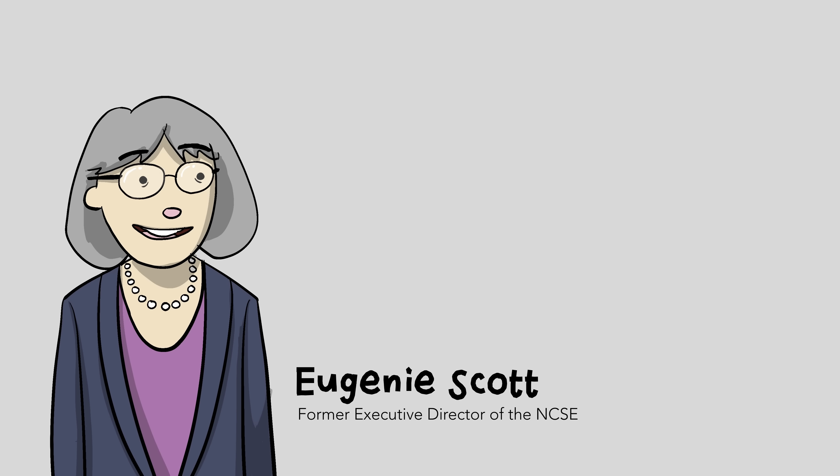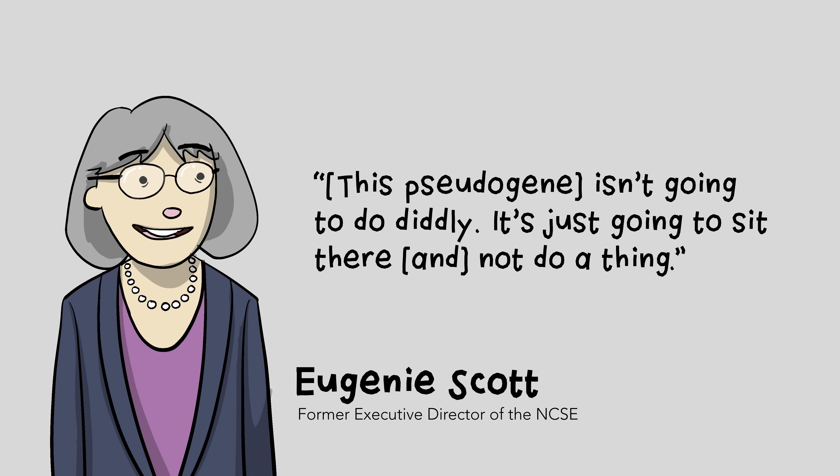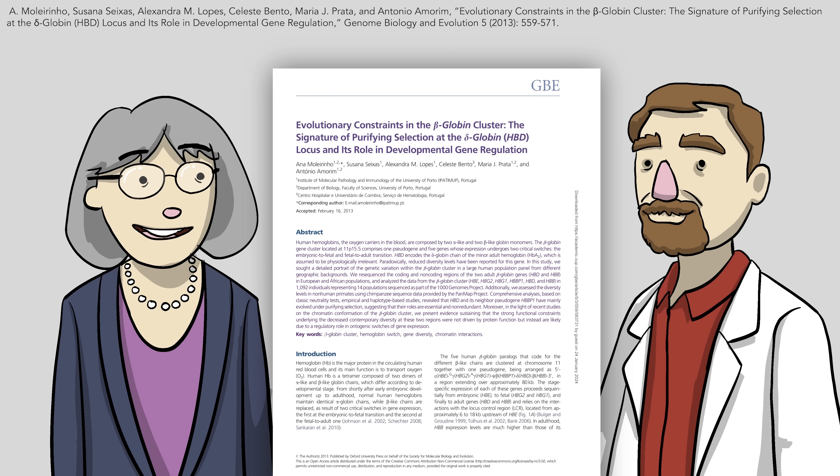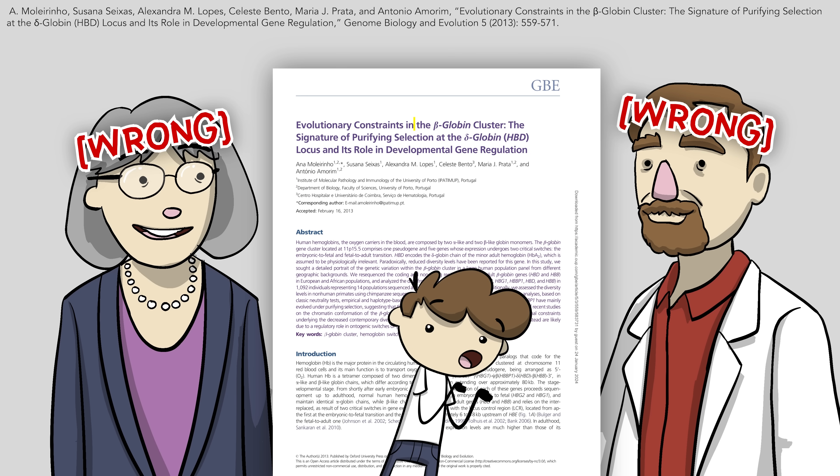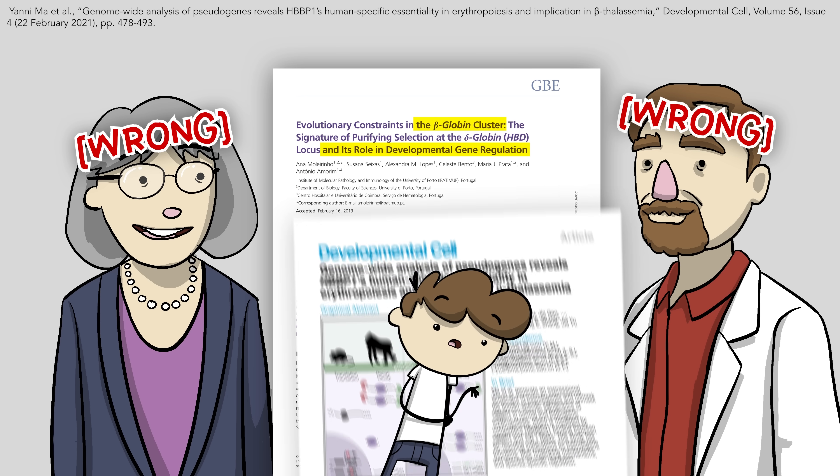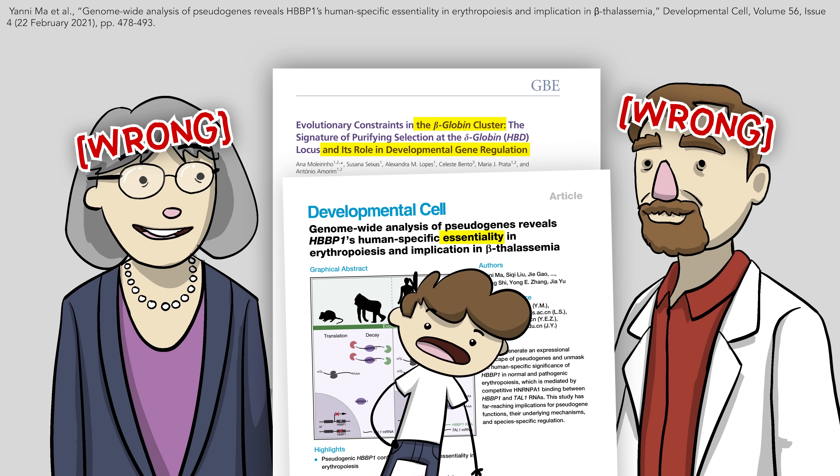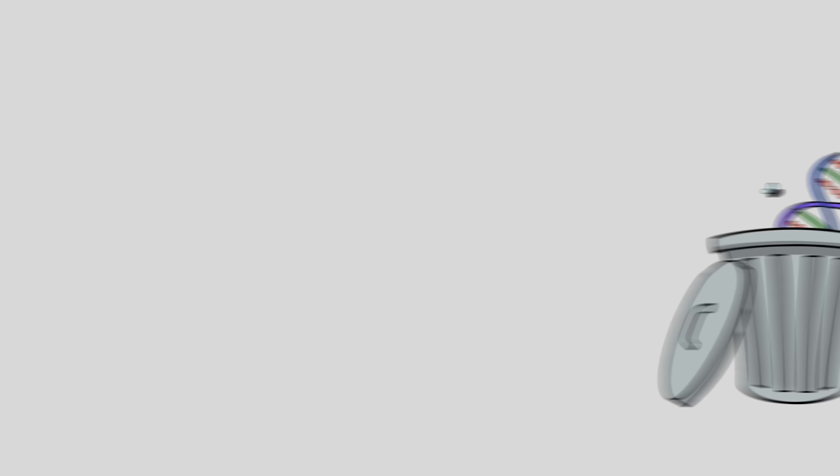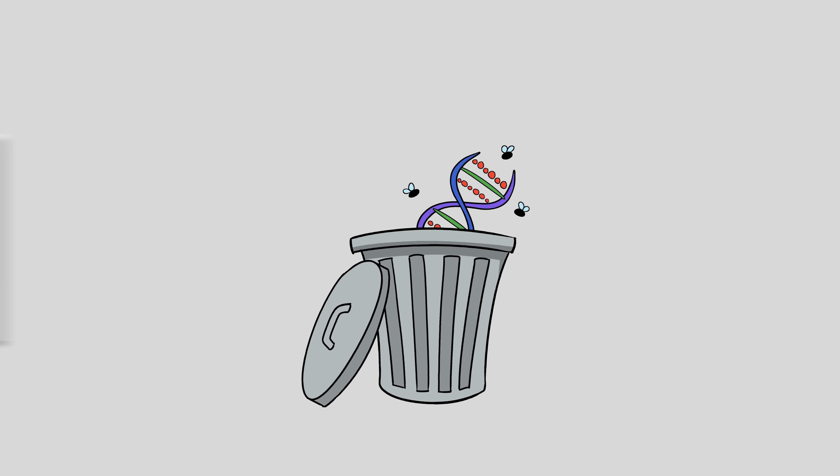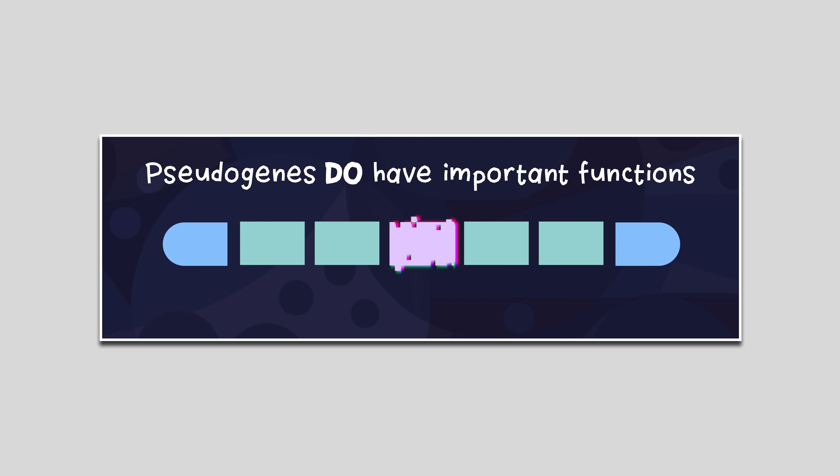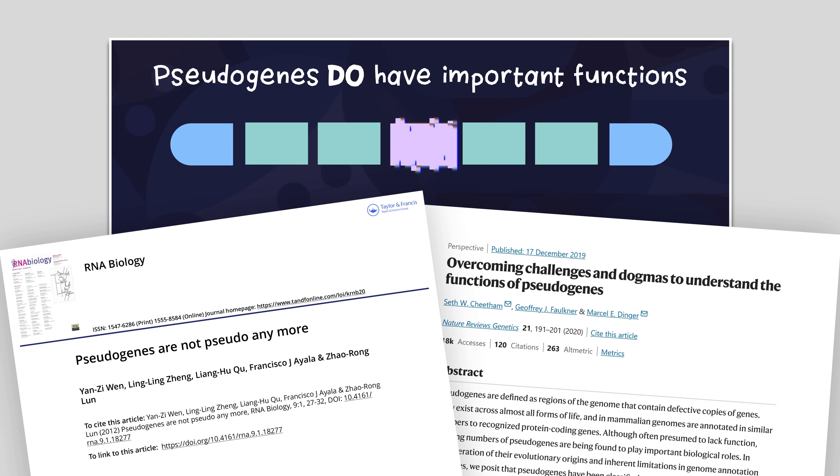Two years later, leading evolution advocate Eugenie Scott claimed this pseudogene isn't going to do diddly. It's just going to sit there and not do a thing. But in 2013, a study proved them both wrong. This pseudogene is functional after all, and a 2021 study actually found that it is essential and has indispensability for human red blood cell formation. The reality is that, just like other claims of junk DNA, this one falls apart since pseudogenes do have important functions like these papers detail.